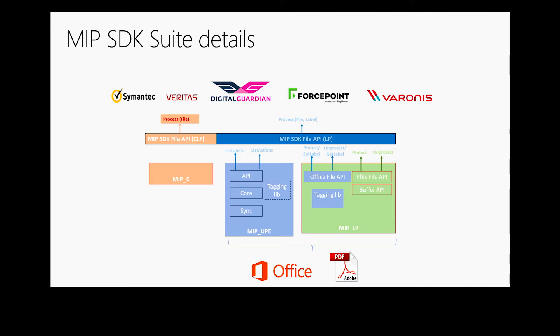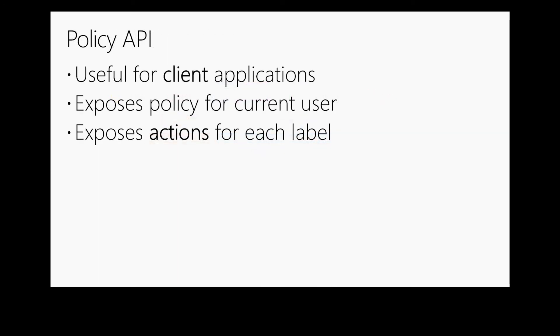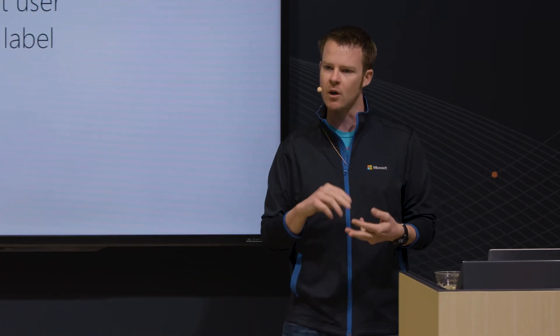The SDK breaks down into three main components: the classification SDK, which is coming soon; our labeling and protection SDK; and our file SDK or API. We have first the policy API, which exposes your organizational classification taxonomy to your applications in a consistent manner. With the policy API, I can display the list of labels that my organization's defined in my line of business application. When a user clicks that label, I call the API to compute the action — for example, applying a header, footer, watermark, metadata, and protection. The API tells the application to do all these things, and it's up to you as a software developer to actually implement that action.